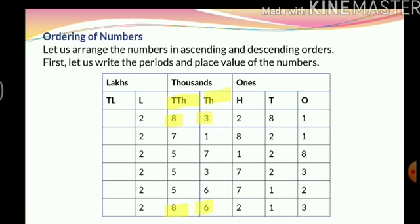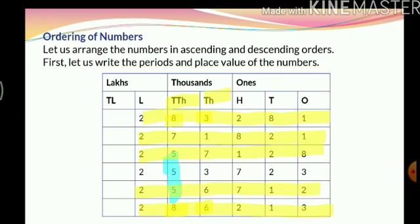Since 6 is greater than 3, our greatest number is 2,86,213 followed by 2,83,281. Now we go back to the ten-thousands place. We can see that we have 3 numbers with 5 in the ten-thousands place, so once more we cannot make any comparison there. We go to the thousands place, where the comparison is easy — 7 is the greatest digit. So 2,57,128 is next, followed by 2,56,712, and finally 2,53,723.